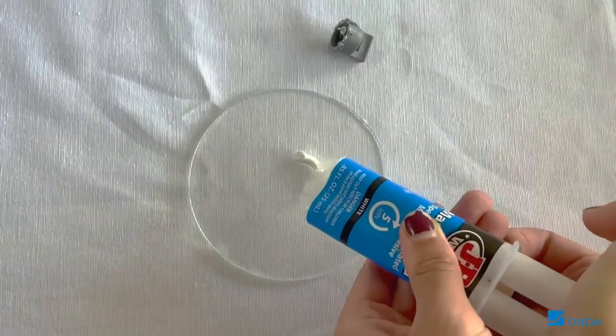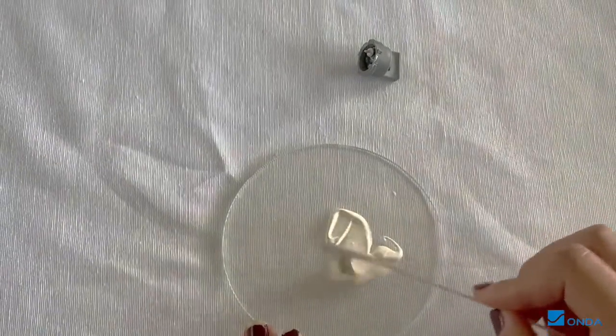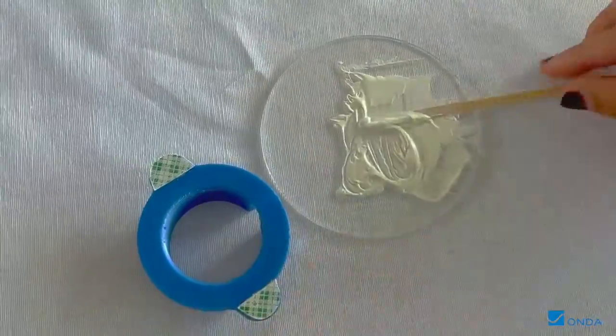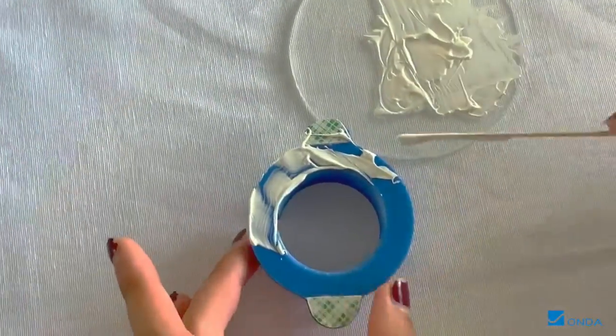To mount the housing onto the tank, mix the epoxy until the color becomes uniform. Apply a light, even layer of the epoxy onto the housing.